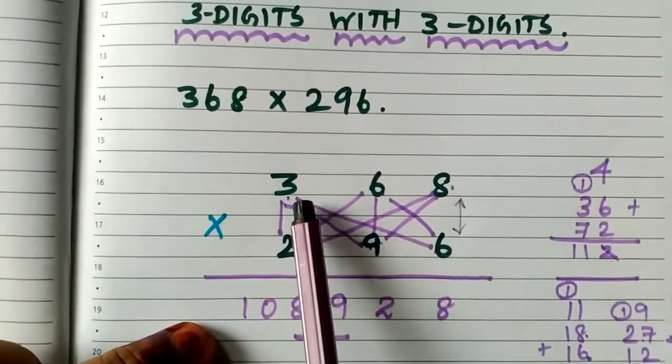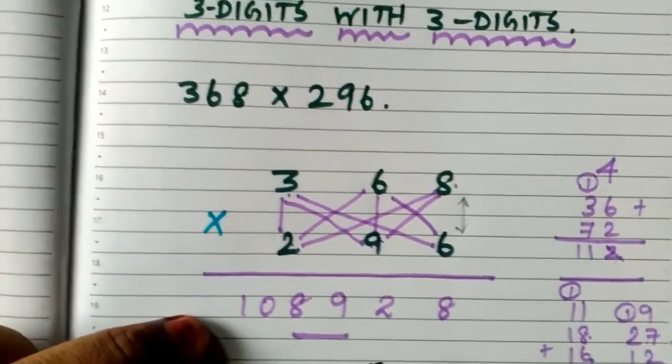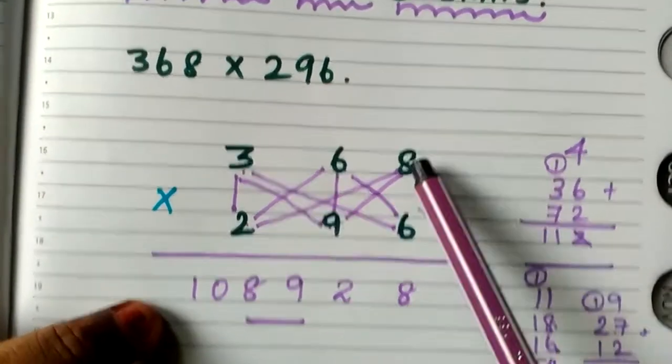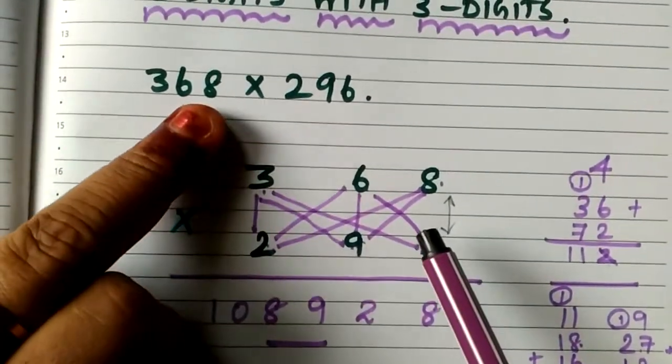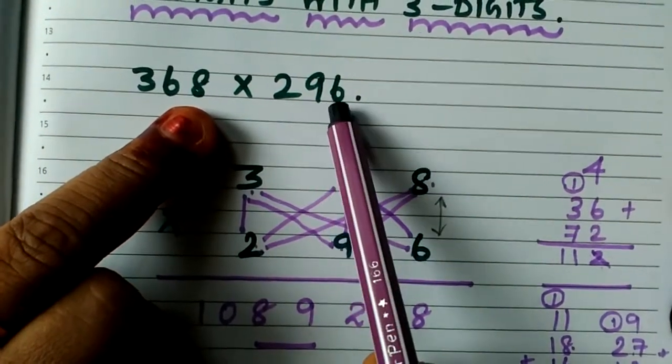First we have to write the numbers 368 and 296 in this format. The first part I am going to multiply with the ones place. So 8 and 6 are the ones place of the two numbers. This is the ones place of 368. This is the ones place of 296.